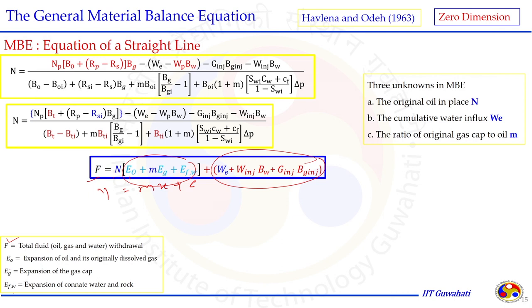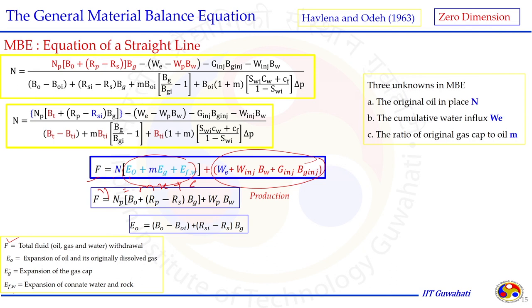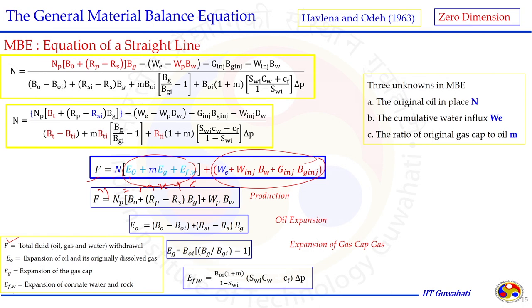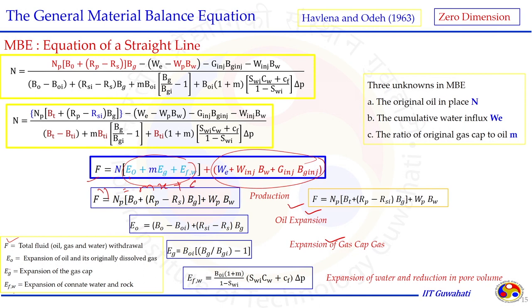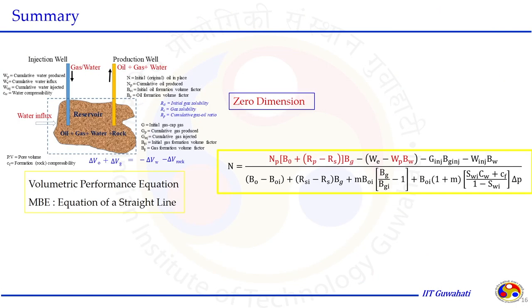These terms can be expressed using BO and BG or converted to two-phase formation volume factors. The straight-line equation has three essential unknowns: N (initial oil in place), M (gas cap ratio), and We (water influx). By fitting the equation in the form Y = mX + c, the slope and intercept yield the values of N, We, and M. We will discuss all these details in the next class.